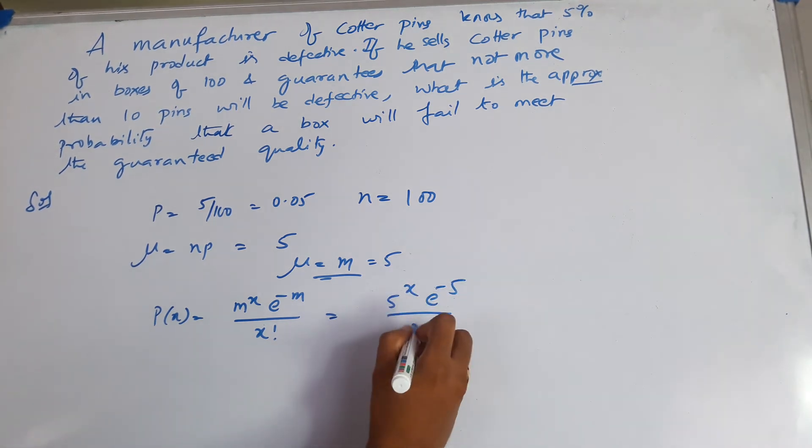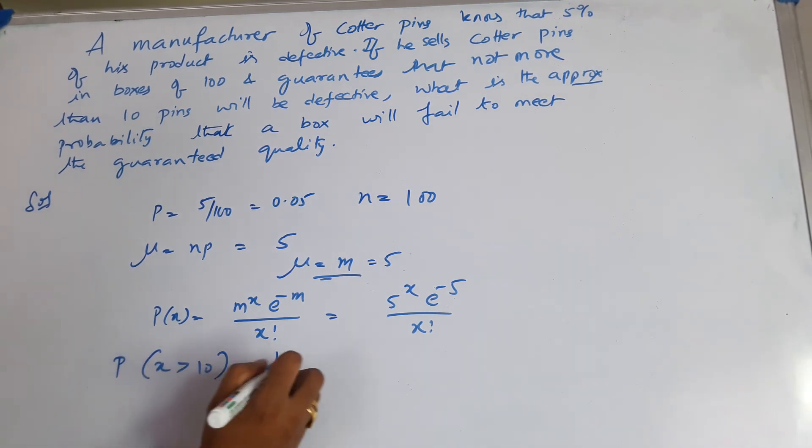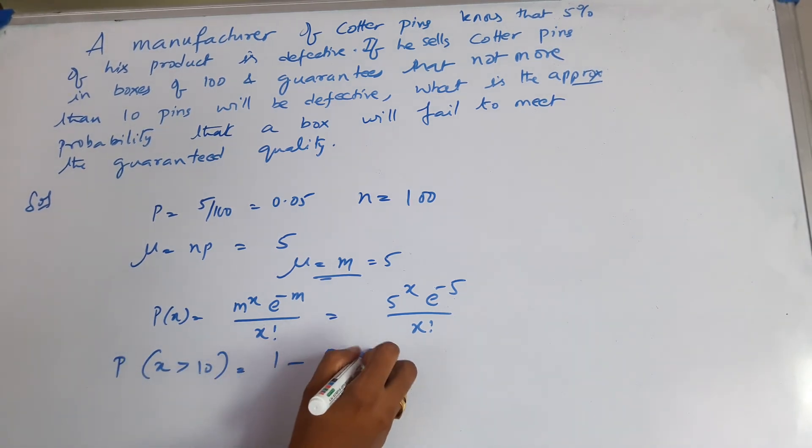So we need P(X greater than 10), which is 1 minus P(X less than or equal to 10).